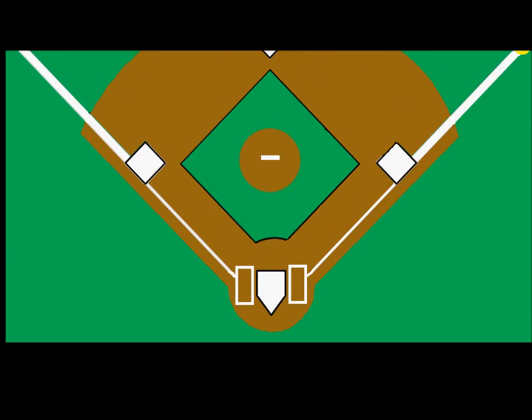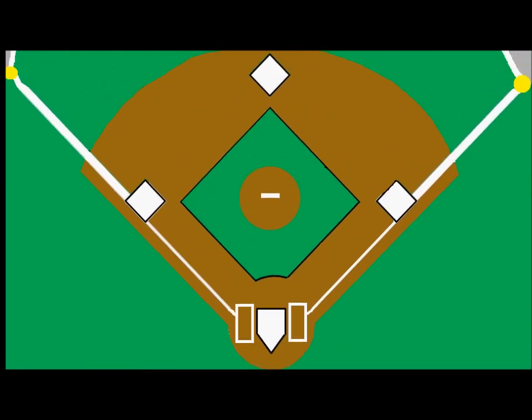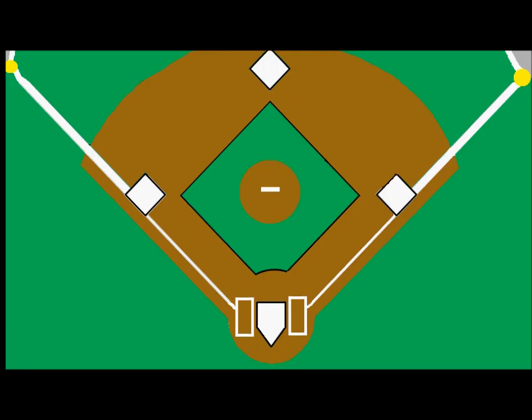A lot of the confusion over this rule comes from the way it's presented to us. When we say the baseline, what you would naturally think about is this line from one base to the next — a straight line. And that's generally correct, but for the purposes of this rule about a runner being called out, that is not the baseline we are referring to.